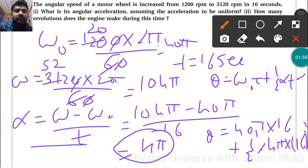Theta equals 640π plus 16 squared, so 16 × 16 = 256. That's 256 × 2π / 2.